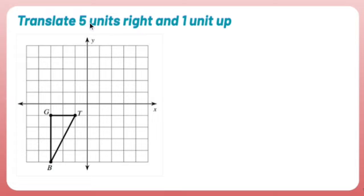Translate this picture five units right and one unit up. All right, so this is a translation. It's a transformation where all I do is take a shape and move it somewhere else. I don't rotate it, I don't flip it, I don't reflect it. It's just I take this shape and move it.